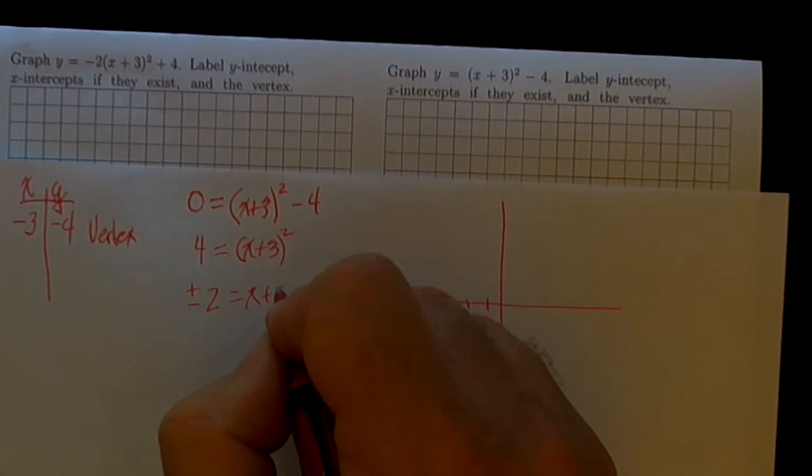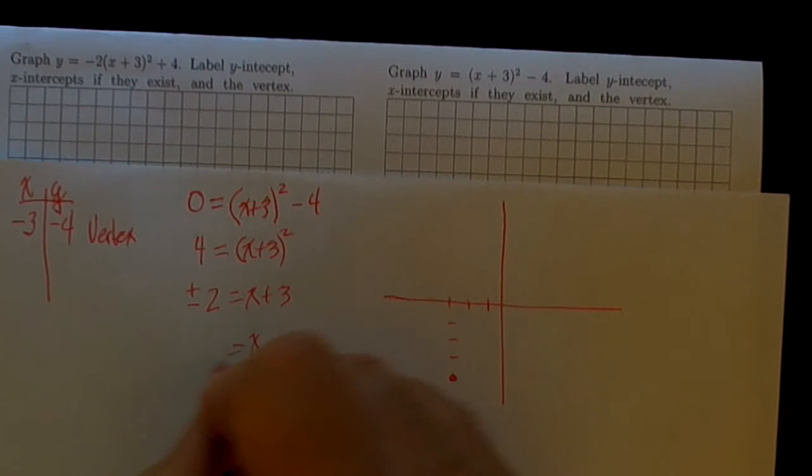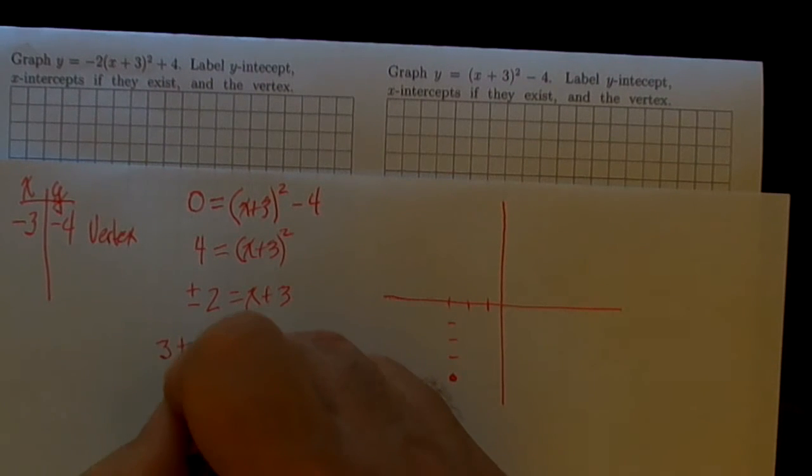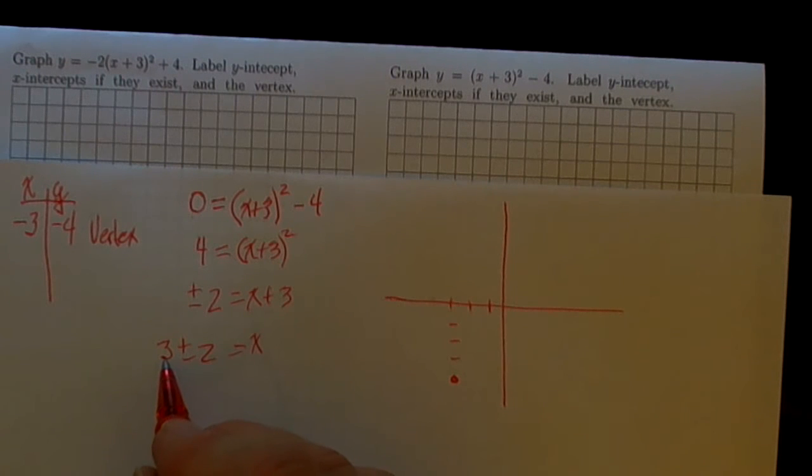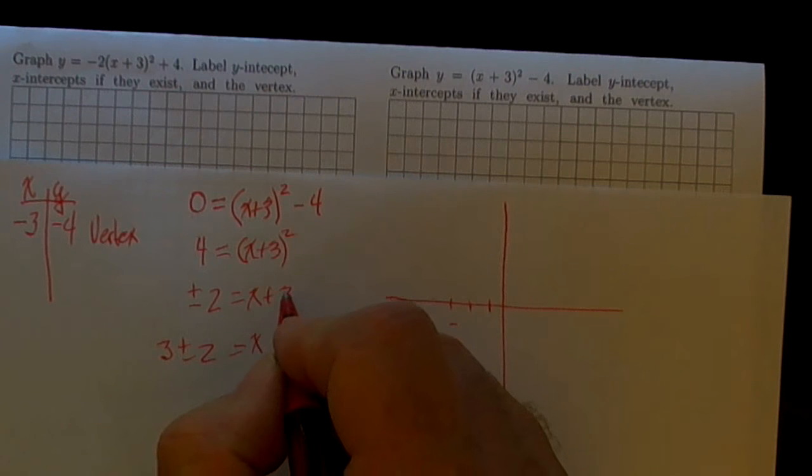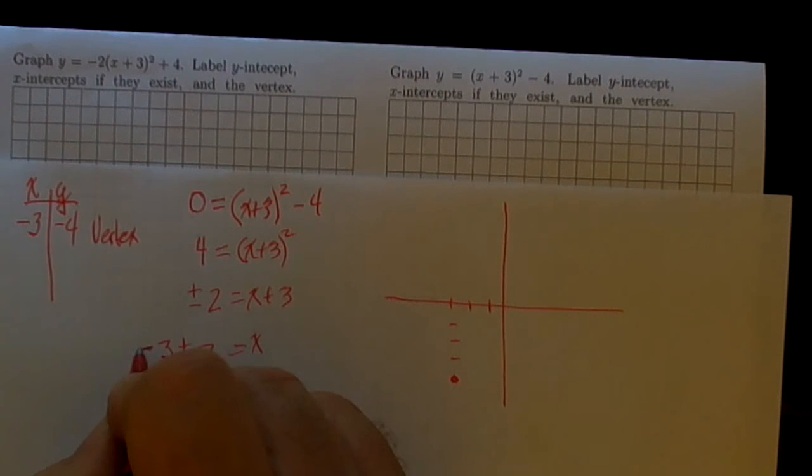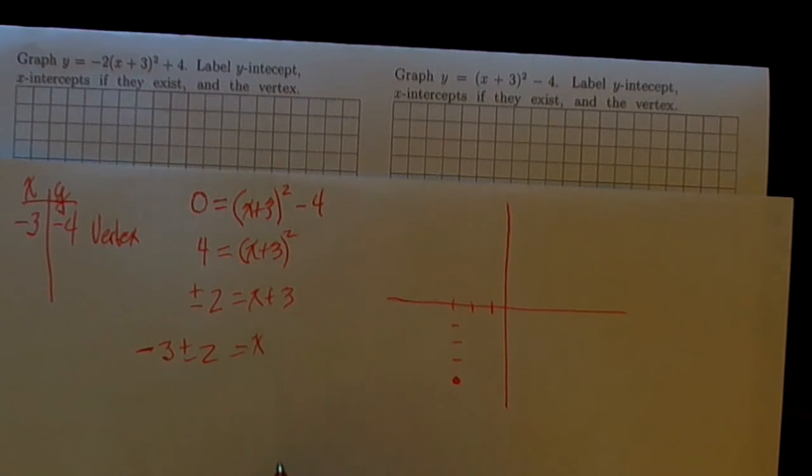So x + 3 = ±2. Let's fill those in. Oh, hang on, I have to subtract 3 from both sides. Subtracting 3 from both sides of the equation, I've got x = -3 ± 2.